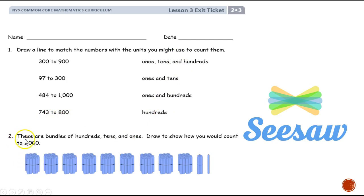Number two, these are bundles of hundreds, tens, and ones. Draw to show how you would count to 1000.